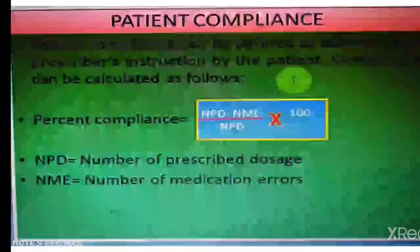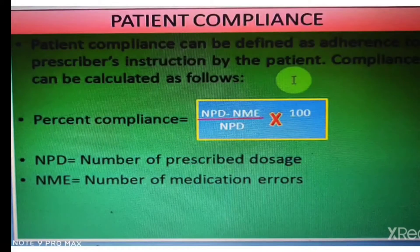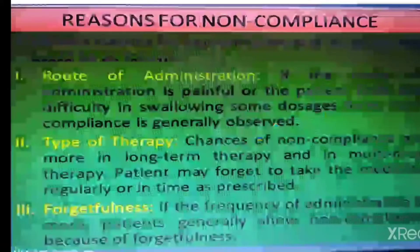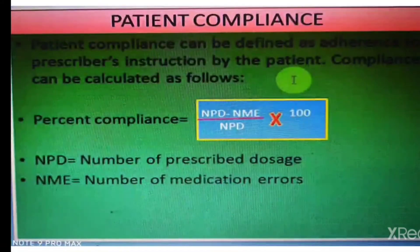What is the patient compliance formula? Patient compliance formula is: (NPD minus NME) divided by NPD, multiplied by 100. NPD is the number of prescribed doses and NME is the number of medication errors.